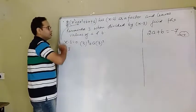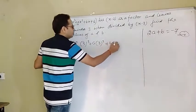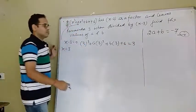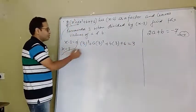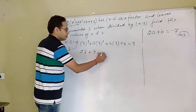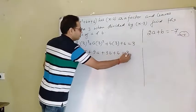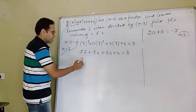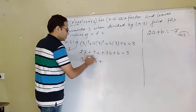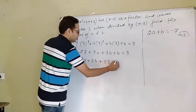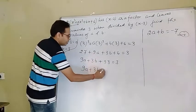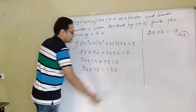So putting x = 3: 3³ + a(3²) + b(3) + 6 = 3, which gives 27 + 9a + 3b + 6 = 3. So 9a + 3b + 33 = 3, or 9a + 3b = -30.